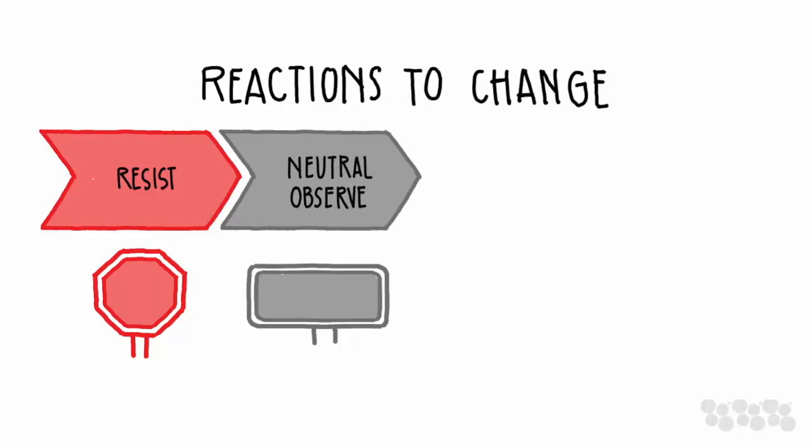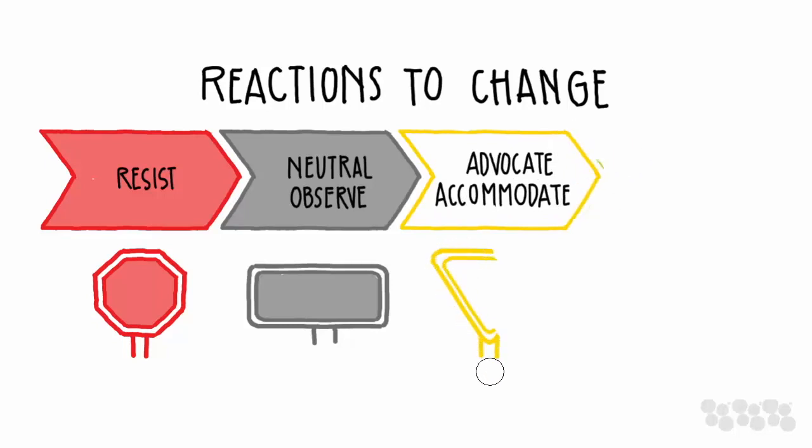And then as you keep going on the spectrum you've got your people that are more neutral. They're gonna wait and see what happens, which side should they fall on. And then you've got your people who are gonna advocate because they're positive, they believe that good things can happen, they trust the people who are working on this change, they're ready to get on board, support it, learn what they need to learn and adopt the change.